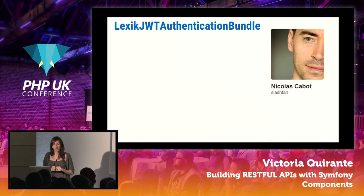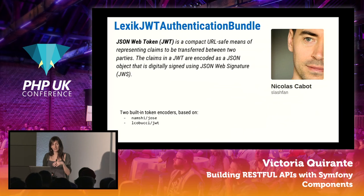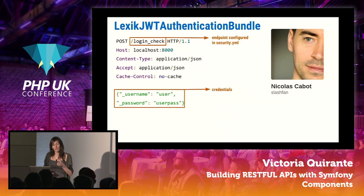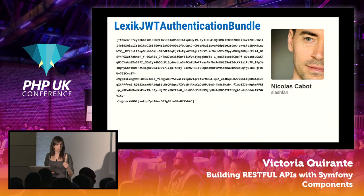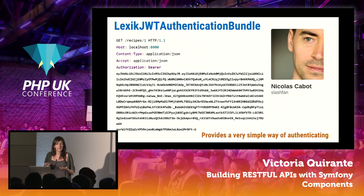The next bundle allows JSON Web Token authentication and can be used together with the Guard component we already saw. It's based on a couple of libraries you could also use without the bundle. The concept: you send credentials — username and password — to a configured endpoint, receive a token, and from that point you use that token to send requests. It's a very simple way to be authenticated. Alternatively you could use OAuth, but in my experience that makes sense only if you have a good reason, since it's quite a bit more complex. Many times JWT is more than enough.